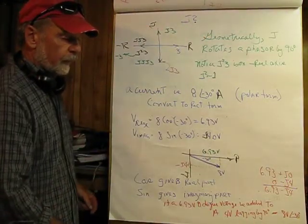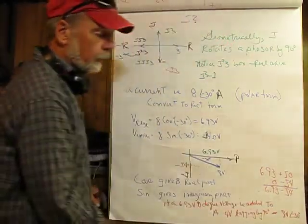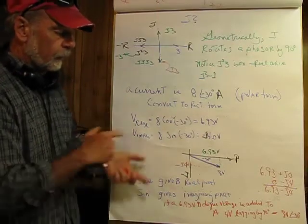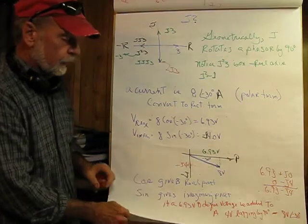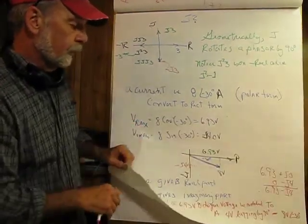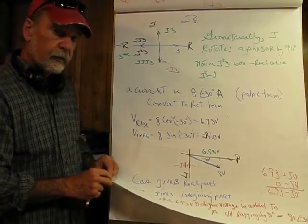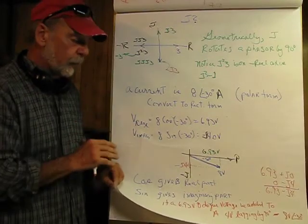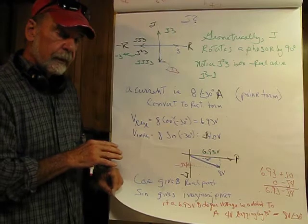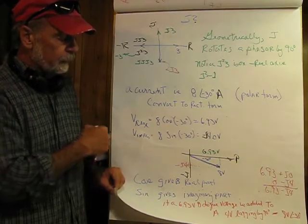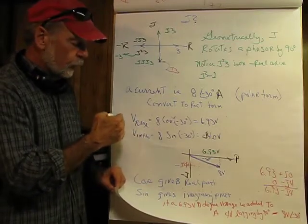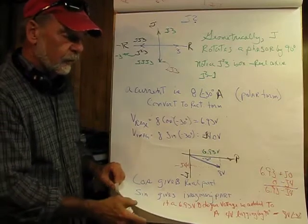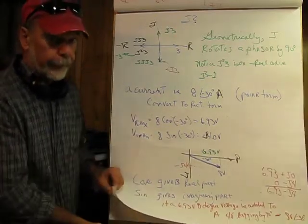If we do the math on that, we find we end up with 8 at negative 30 degrees. We convert the rectangular form back to polar, and we should end up with exactly the same values. These are the two ways of representing this, and it comes about by the genius of a man named Steinmetz, who back in the late 1800s figured this out. This is a simple but powerful way that avoids calculus in doing these calculations.